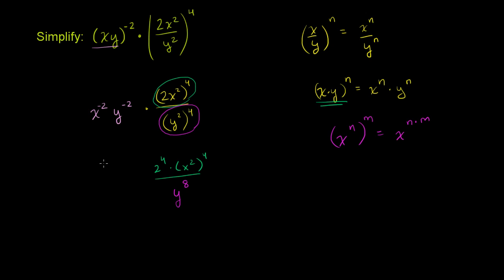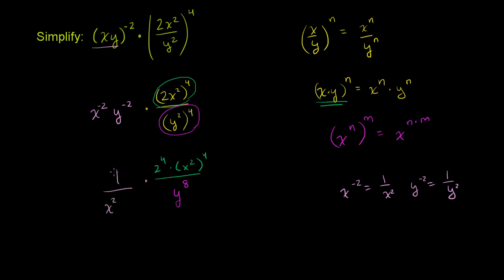And of course, out here we have x to the negative 2 times y to the negative 2. Let's think about what those mean. x to the negative 2 just means 1 over x squared, and y to the negative 2 just means 1 over y squared. So we can rewrite that as 1 over x squared times 1 over y squared, which is the same as 1 over x squared y squared.